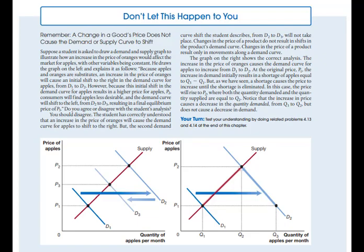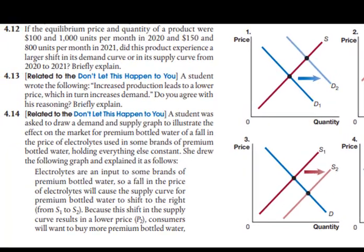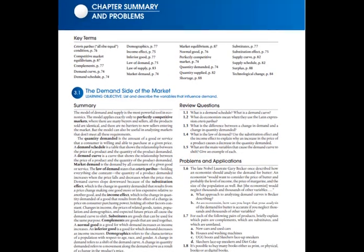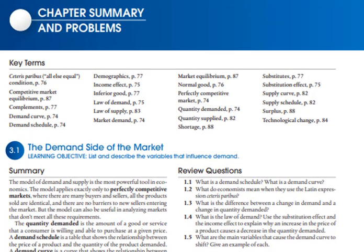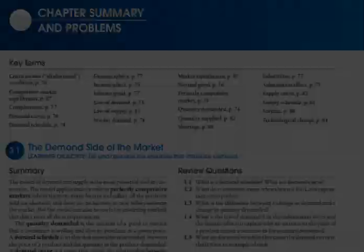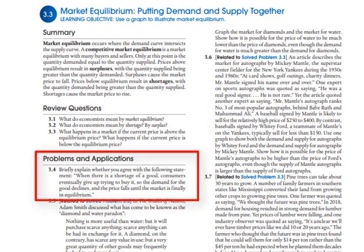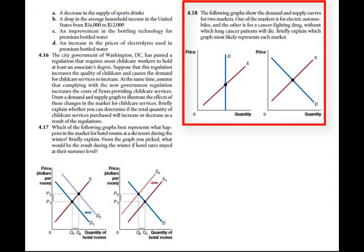Each chapter includes a box feature called Don't Let This Happen To You that alerts students to the most common pitfalls in that chapter's material. A related follow-up question is included in the End of Chapter Problems and Applications section. End of chapter material — summary, review questions, and problems and applications — are organized by learning objectives. Each major section of the chapter, paired with a learning objective, has at least two review questions and three problems. Many End of Chapter Problems and Applications are either updated or new in most chapters, and one or two problems include graphs or tables for students to analyze.